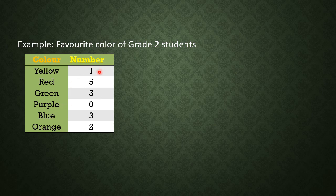There is only one student who likes yellow. There are 5 students who like red. There are 5 students who like green. No students like purple. There are 3 students who like blue, and there are 2 students who like orange.